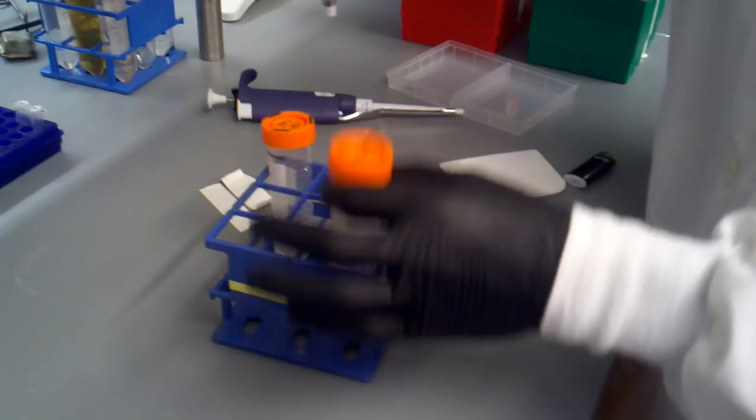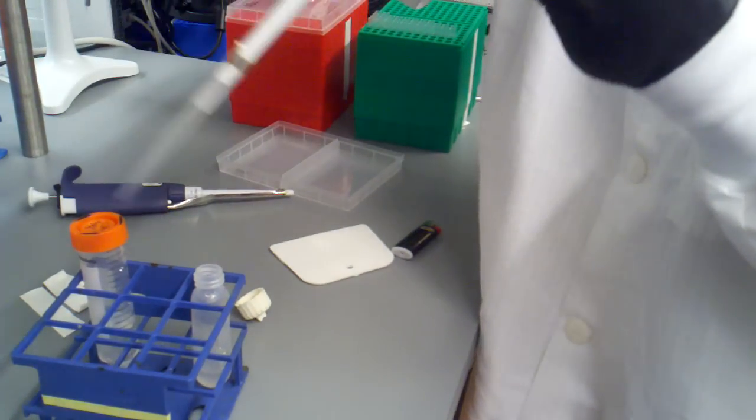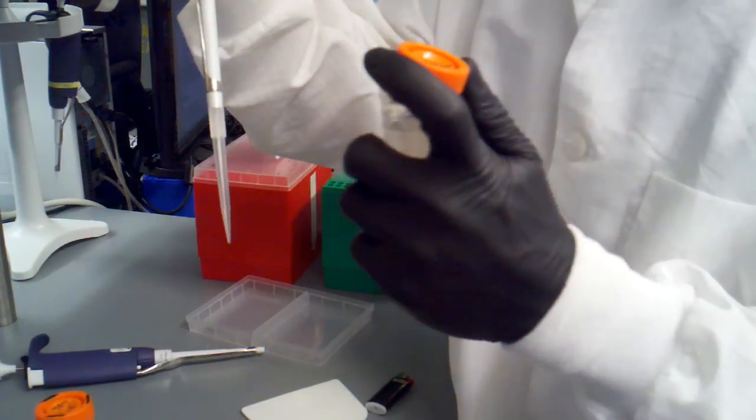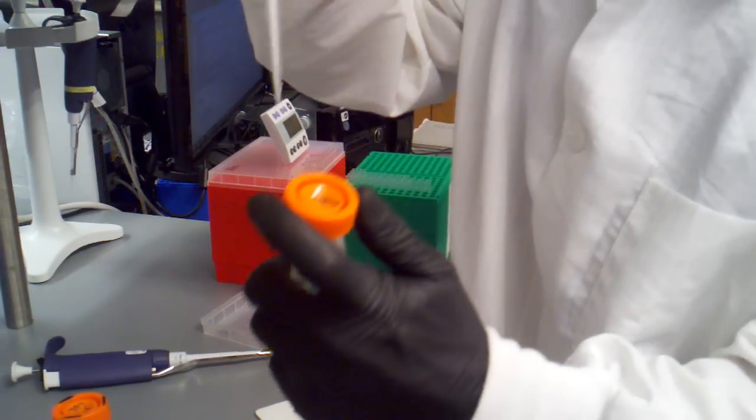So this is 100% isopropanol. This is going to precipitate out the DNA. We're going to pellet that, and then we're going to be able to pour off everything else. We're going to have just a DNA pellet which we're going to be able to resuspend.